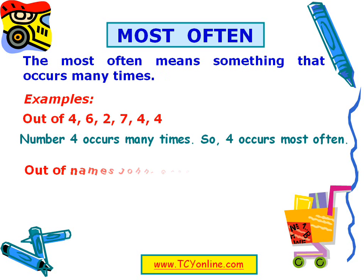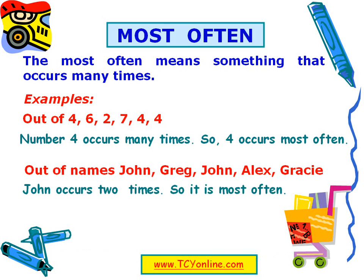Similarly, in these names — John, Greg, John, Alex, and Gracie — John occurs two times and the rest occur only once. So John occurs most often.